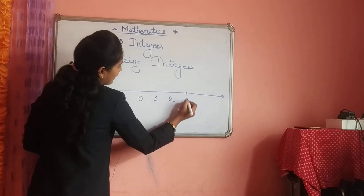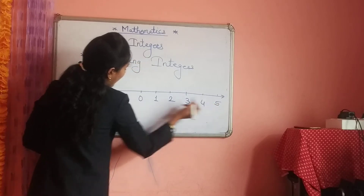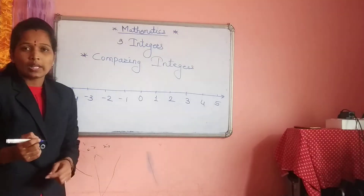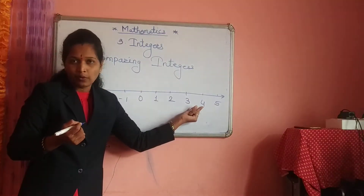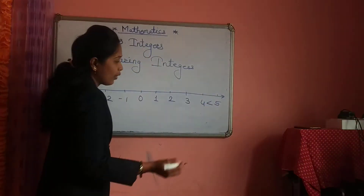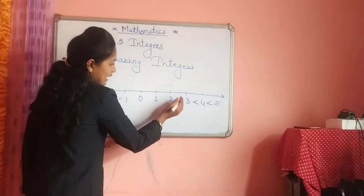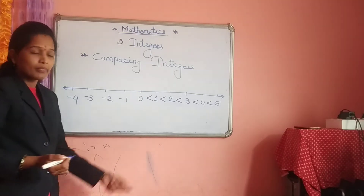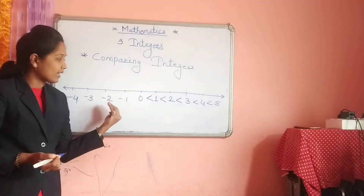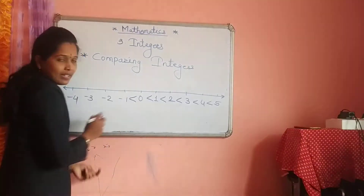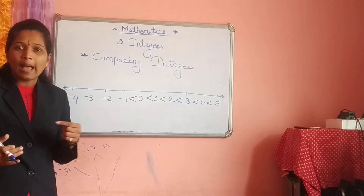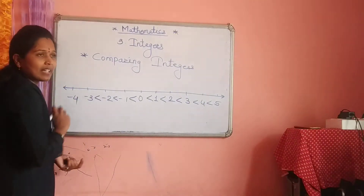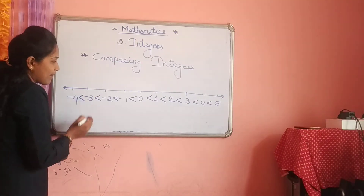On the right-hand side are positive numbers — 3, 4, and 5. On the left side: minus 1, minus 2, minus 3, minus 4. Always remember: 5 is greater than 4, 4 is greater than 3, 3 is greater than 2, 2 is greater than 1, 1 is greater than 0. On the left-hand side you have negative numbers. So 0 is greater than minus 1, minus 1 is greater than minus 2, minus 2 is greater than minus 3, minus 3 is greater than minus 4.